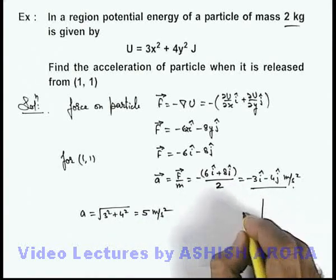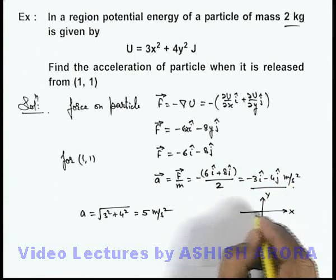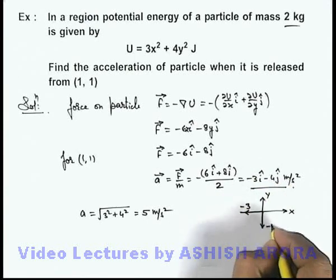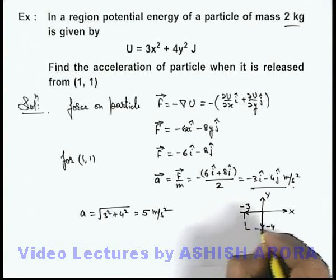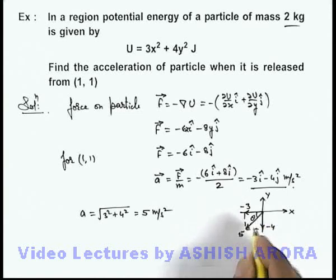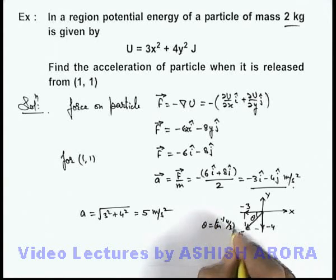And as it is acting in minus x and minus y direction - in x direction it will be minus 3, in y direction it is minus 4 - so the resultant here, this 5 is at an angle theta making with the negative direction of x-axis, and the value of theta will be tan⁻¹(4/3), that will be 53 degrees.